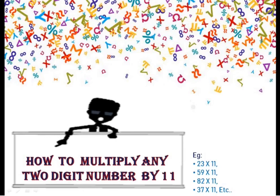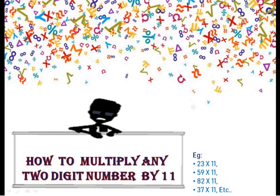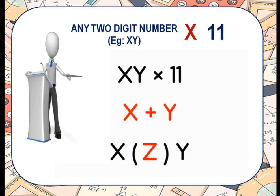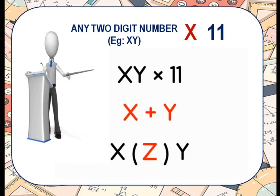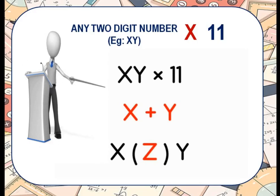How to multiply any two-digit number by 11 in a quick way. Friends, let us understand the method. Here, I am using x and y as a two-digit number, and I am going to multiply it with 11.